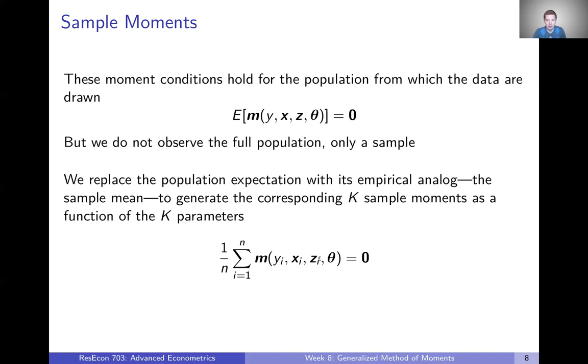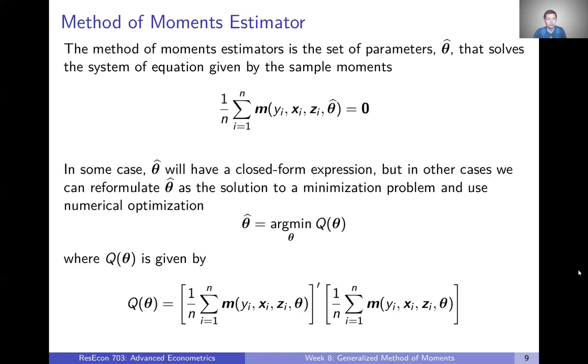We're still going to have k-parameters there. So we're going to end up with k-equations that are functions of the sample of data that we have and these k-parameters that we want to estimate. And those should equal, every one of those equals zero.